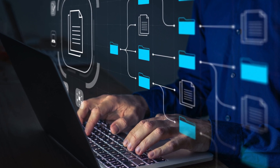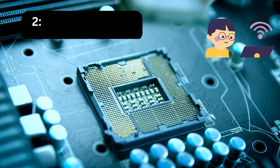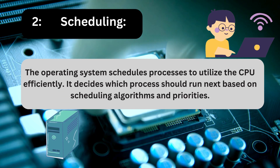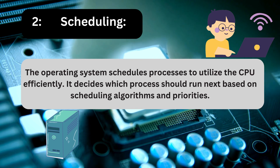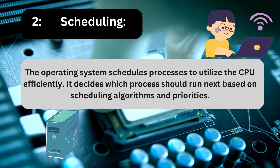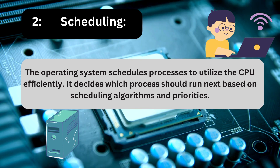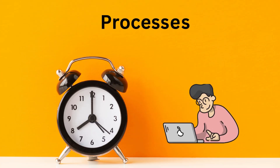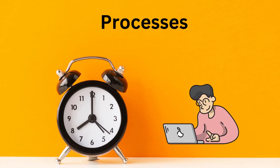Two: scheduling. The operating system schedules processes to utilize the CPU efficiently. It decides which process should run next based on scheduling algorithms and priorities. Processes may need to wait for resources or events before they can continue execution.